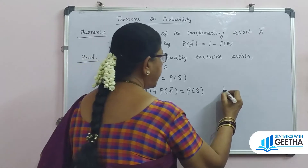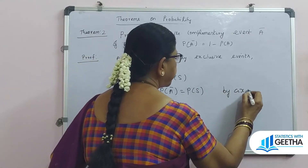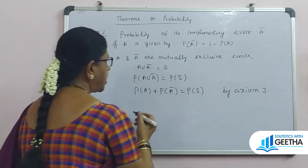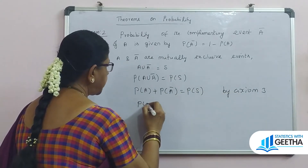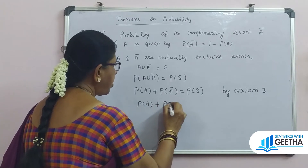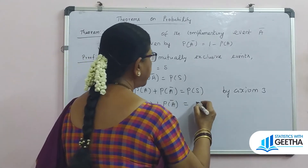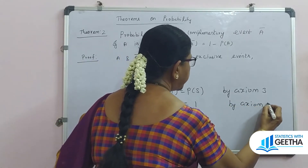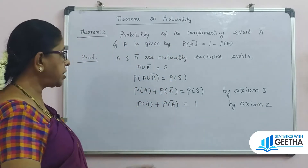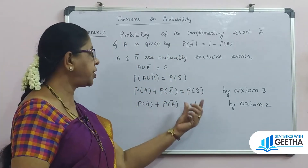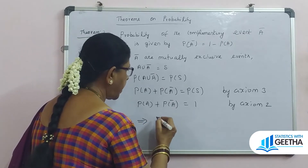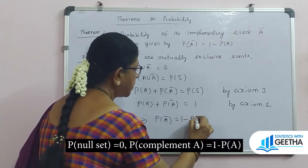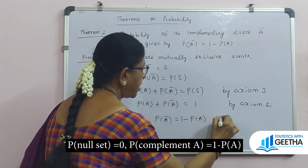Applying axiom 3: P(A) plus P(A') equals P(S). By axiom 2, P(S) equals 1. This implies P(A complement) equals 1 minus P(A). Hence the proof.